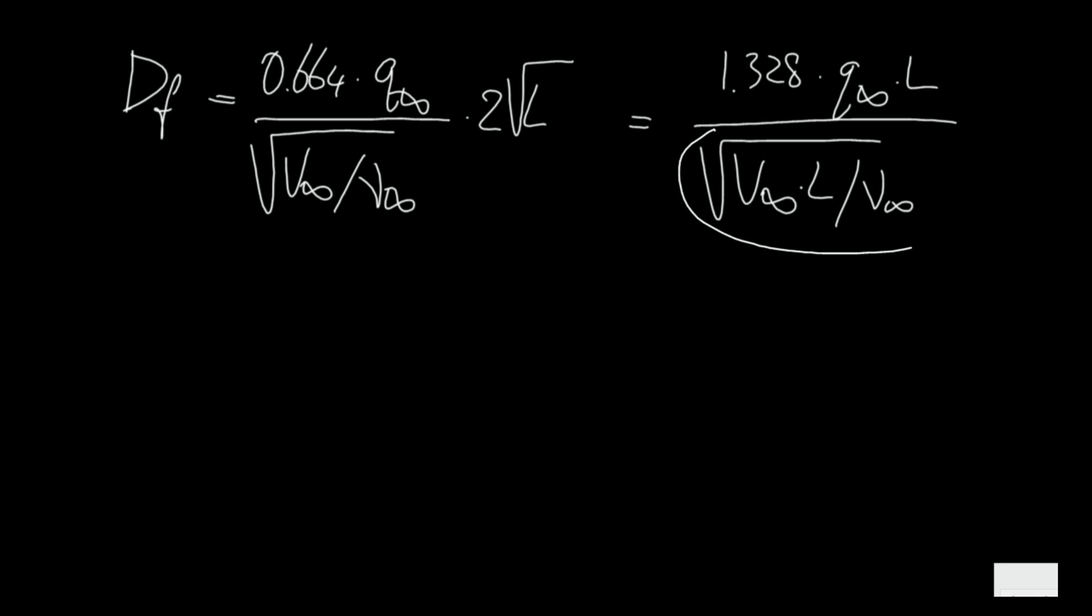Now you may recognize here that what is under the square root is of course something that has to do with the Reynolds number. So it is in fact 1.328 times Q infinity times L divided by the square root of REL, the Reynolds number based on the flat plate length.